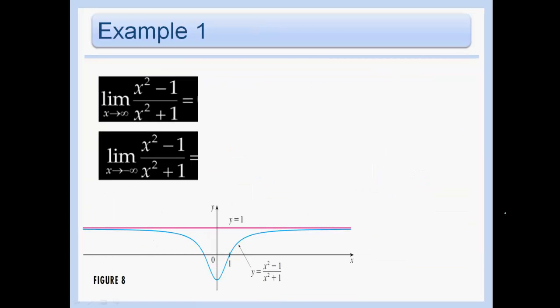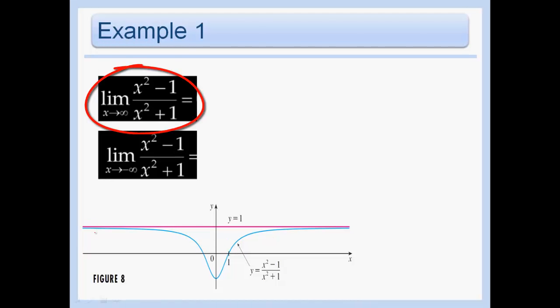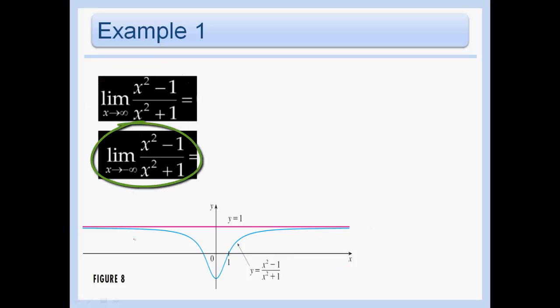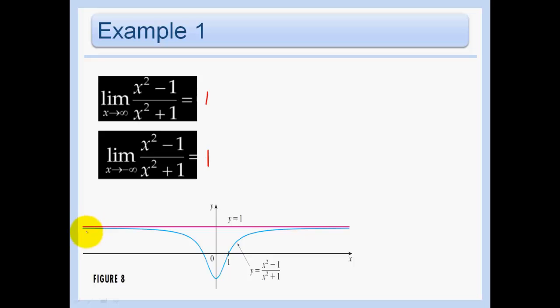Let's look at this example with the graph drawn in. We want the limit as x approaches infinity — what's happening all the way on the right of the graph — and the limit as x approaches negative infinity — all the way on the left. In both cases, from the figure it's pretty clear that we get 1, both all the way on the left and all the way on the right.